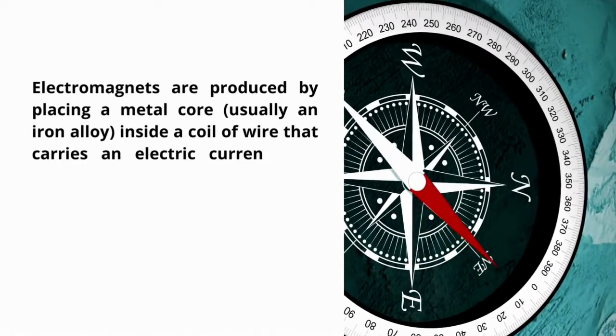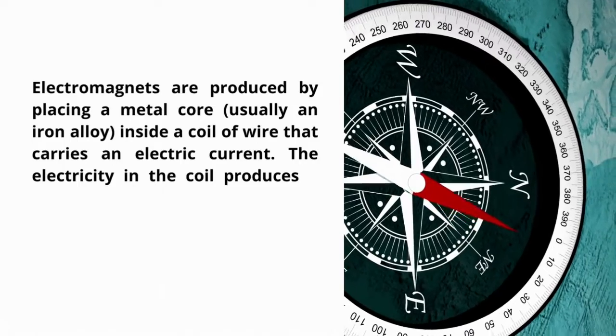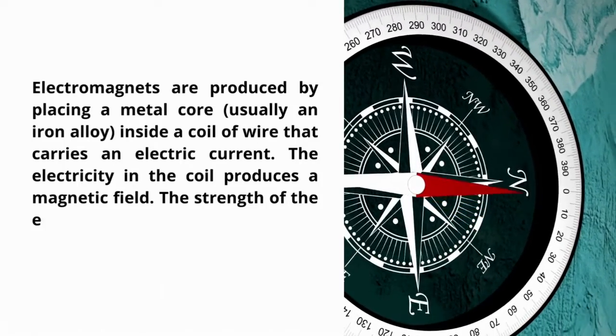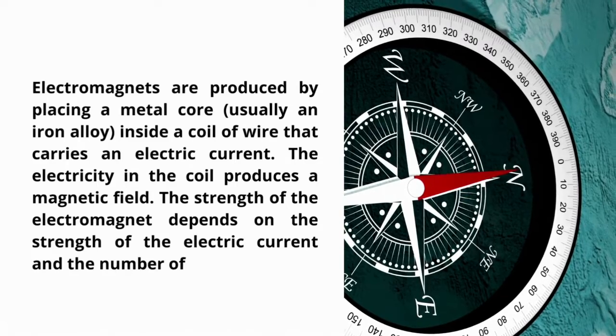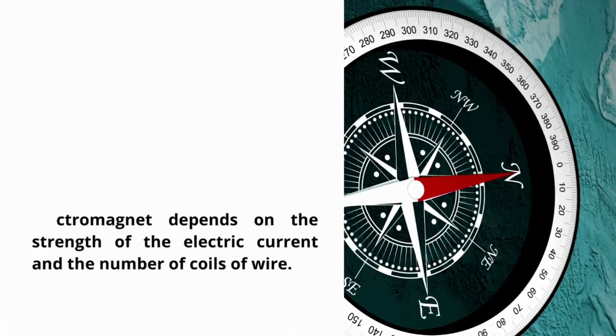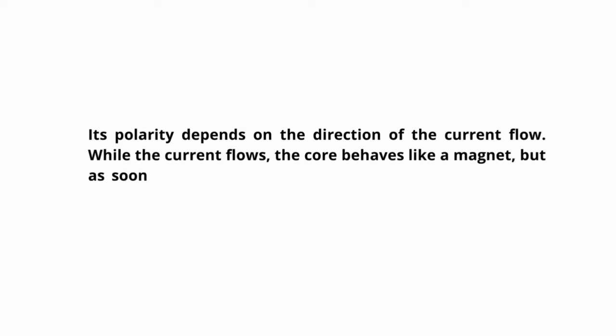Electromagnets are produced by placing a metal core inside a coil of a wire that carries an electric current. The electricity in the coil produces a magnetic field. The strength of the electromagnet depends on the strength of electric current and the number of coils of wire.